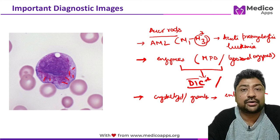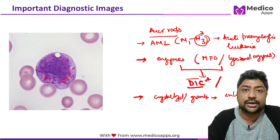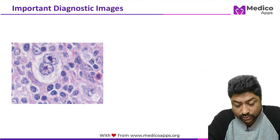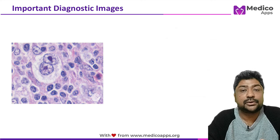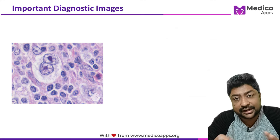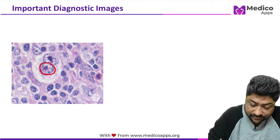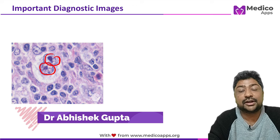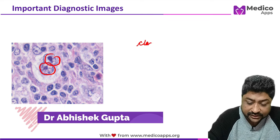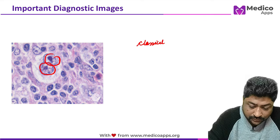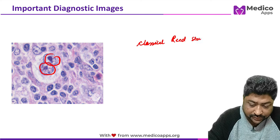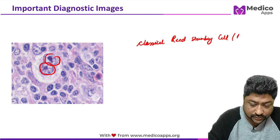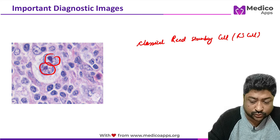DIC is very common in this AML subtype because of the Auer rod cells. This is a very important clinical image. Next, let's look at another image — I'll take you through a lot of important histological slides in this video.